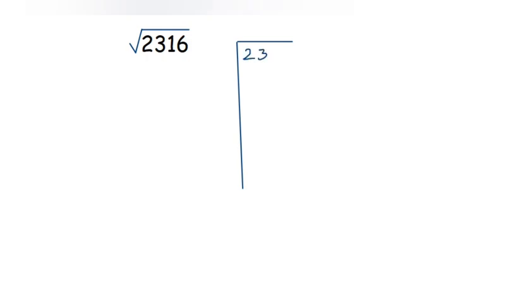For the square root of 2316, we again use long division. Pair up the digits from the right: '16' is one pair and '23' is the other. Find the nearest perfect square to 23, which is 16, and 4 × 4 = 16. So the divisor is 4 and the quotient digit is 4. 4 × 4 = 16; subtract from 23 to get remainder 7. Drop the pair '16' to get new dividend 716.